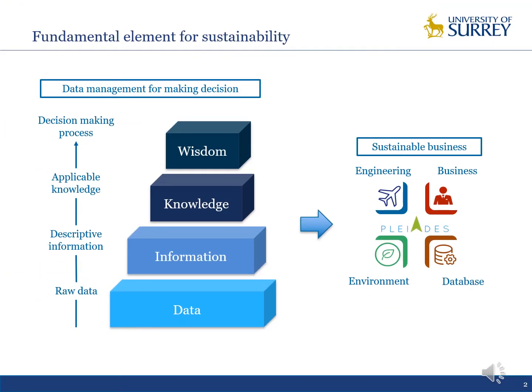The first thing I want to show you is the importance of data in sustainable business. The figure on your left shows the pyramid about how data can be managed for making decisions. We can see that the raw data is progressively treated to be more descriptive information and applicable knowledge, which will be used by decision makers to better understand and act on environmental impact involved in all business operations. The data is heavily linked to business activities and plays a fundamental role for the success of sustainability.